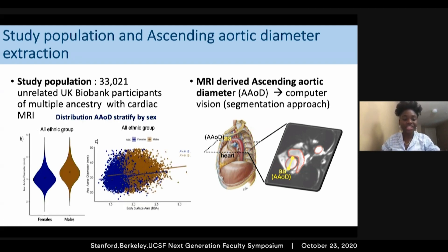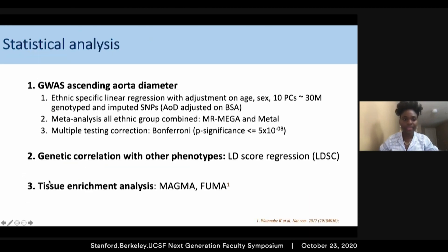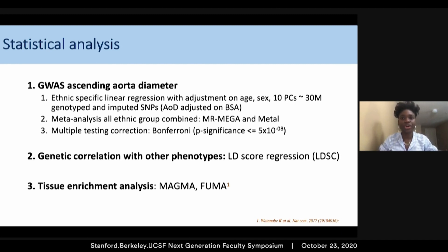This graph represents the distribution of aorta diameter for all individuals stratified by ancestry group. As expected, men have on average a bigger aorta than women. Using this information, I performed an association analysis on over 30 million genotyped and imputed SNPs using a linear regression with adjustment on age, sex, the top 10 principal components, and body surface area within each ethnic group, followed by a meta-analysis combining all ethnic groups. I also performed genetic correlation with other traits and tissue enrichment analysis to identify tissues with significant enrichment of our GWAS signal.